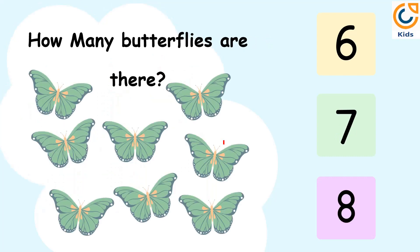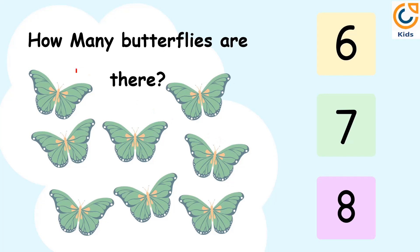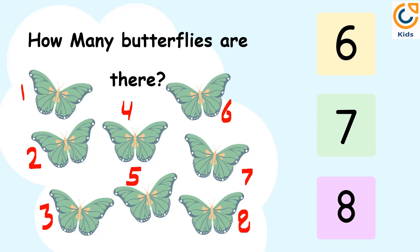How many butterflies are there? Let's count the number of butterflies. 1, 2, 3, 4, 5, 6, 7, 8. There are 8 butterflies, so the answer is 8.